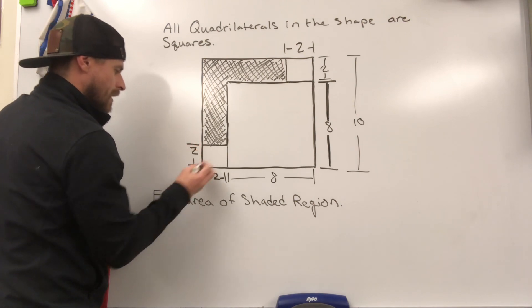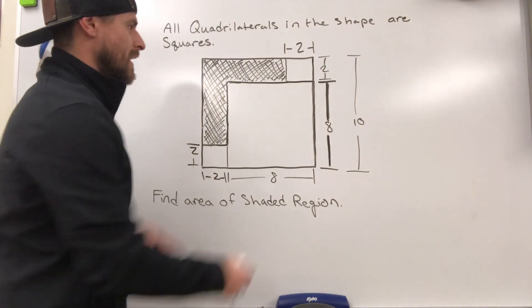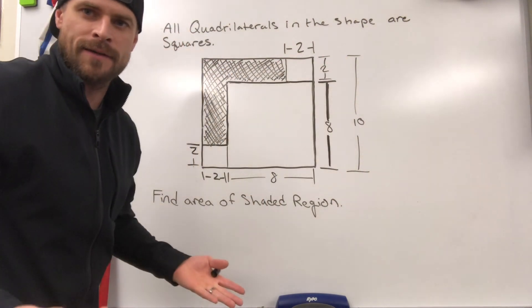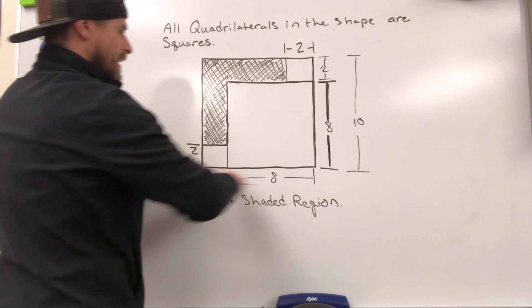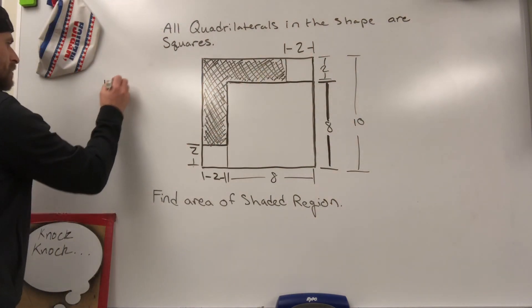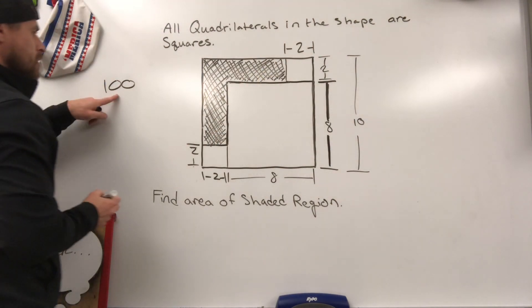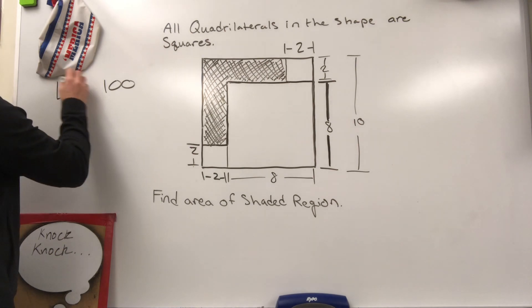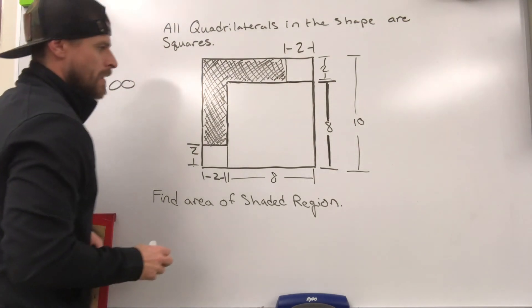And now that we've got all of our measurements, we've got a 10 by 10 for the total. So let's find the area of that big square that we're dealing with. 10 by 10. 10 times 10 makes 100 square units. So the big shape, the big square is 100 units squared.